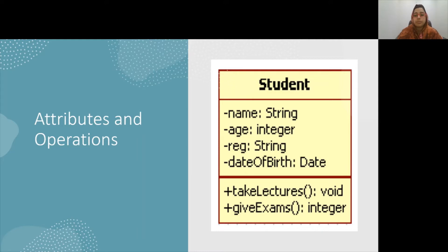The two other common components of a class are the attributes list and the operations list. Each attribute and operation are listed one per line in their respective compartment. Each attribute and operation name should start with a lowercase letter. The only exception is a constructor operation, which will have the same name as the class itself — starting with a capital letter with no spaces. Each middle word of the attribute or operation name should start with a capital letter, such as takeLectures or giveExams.